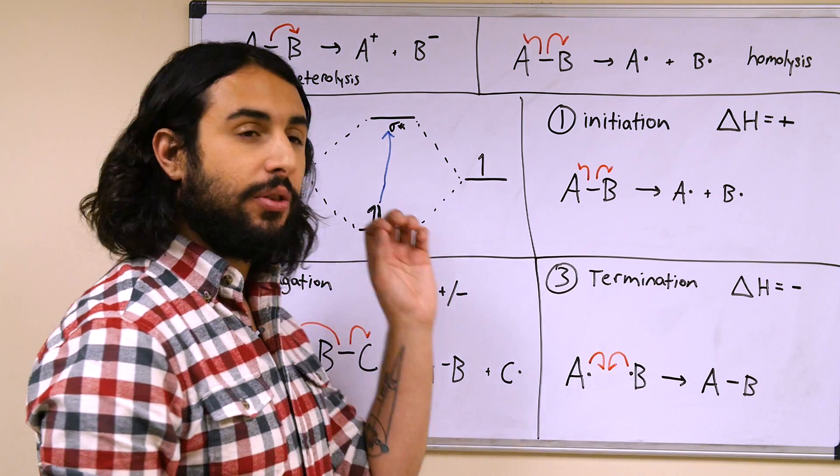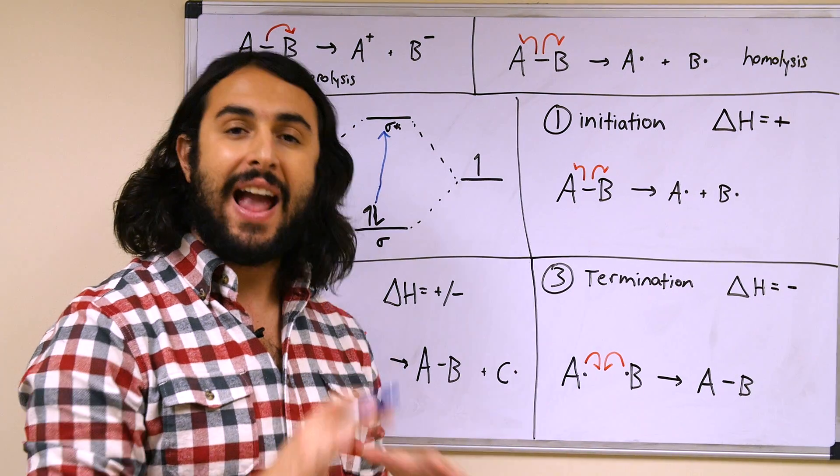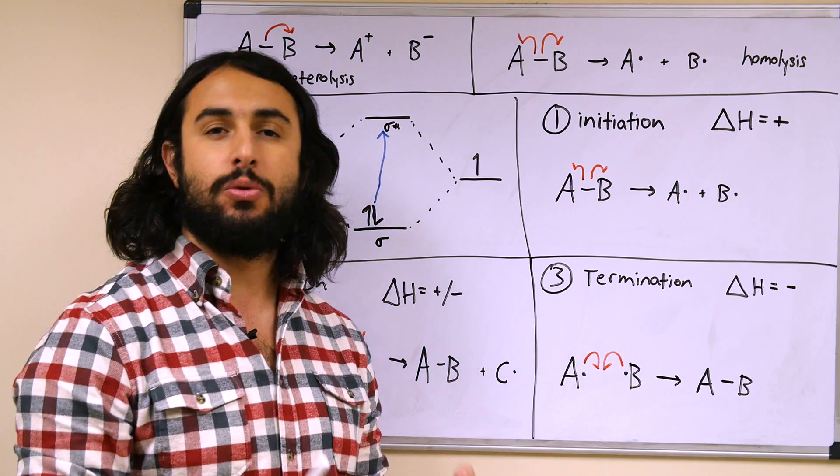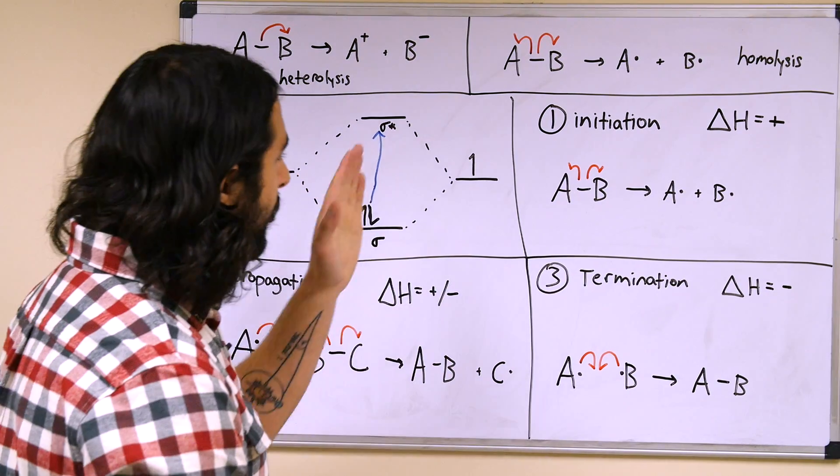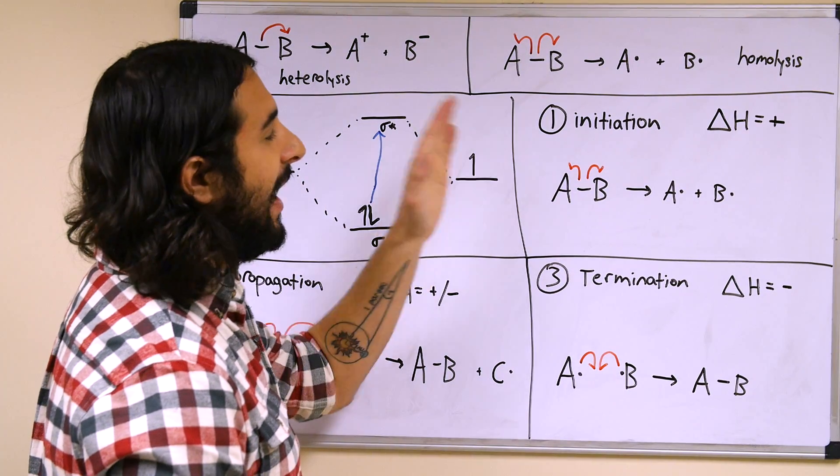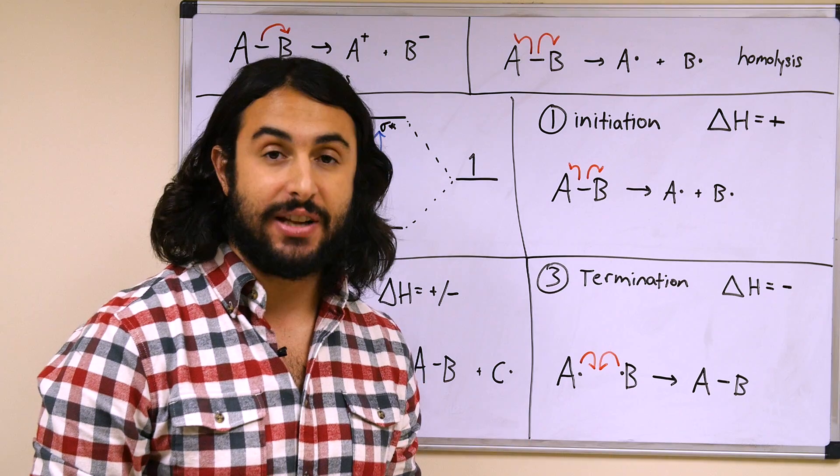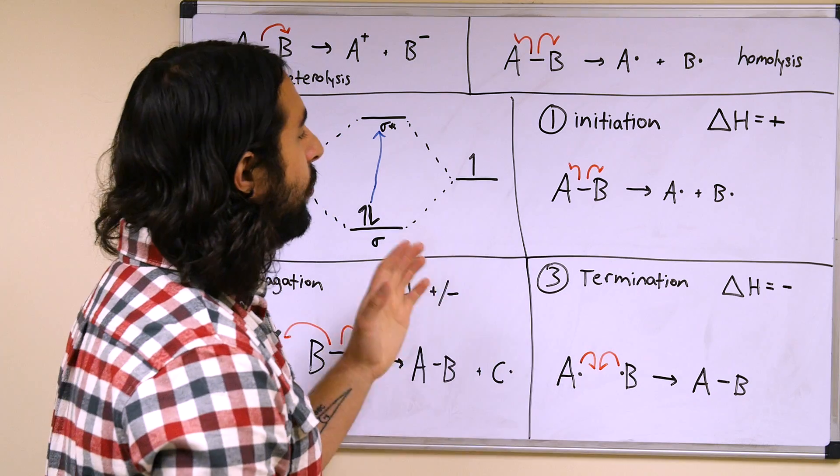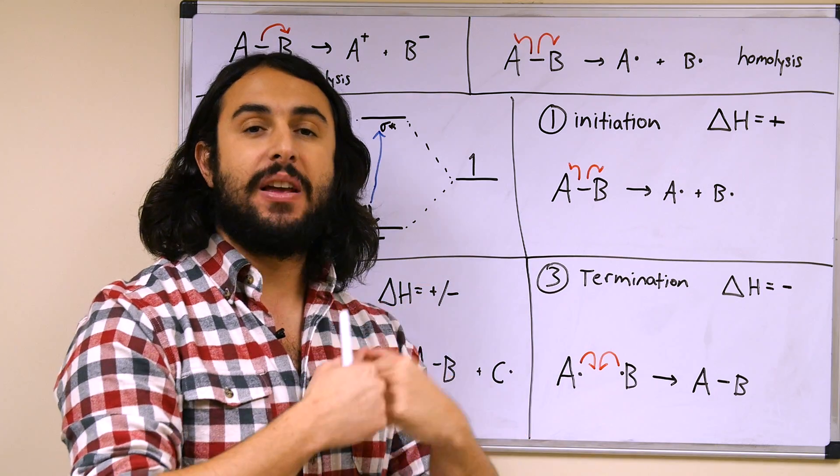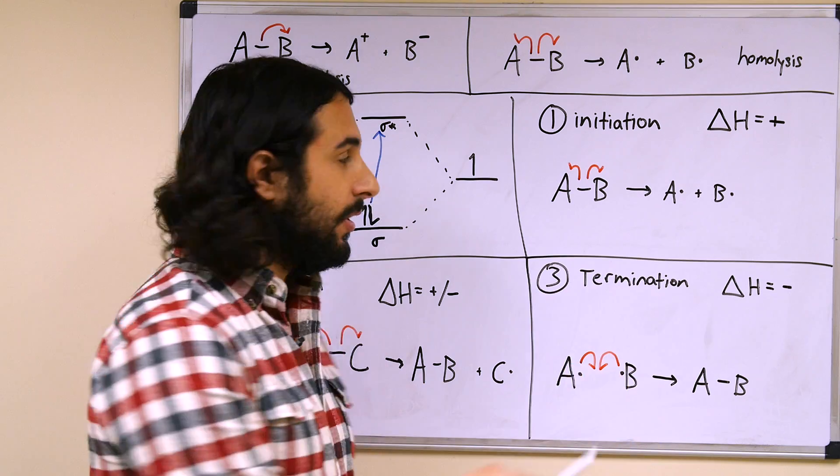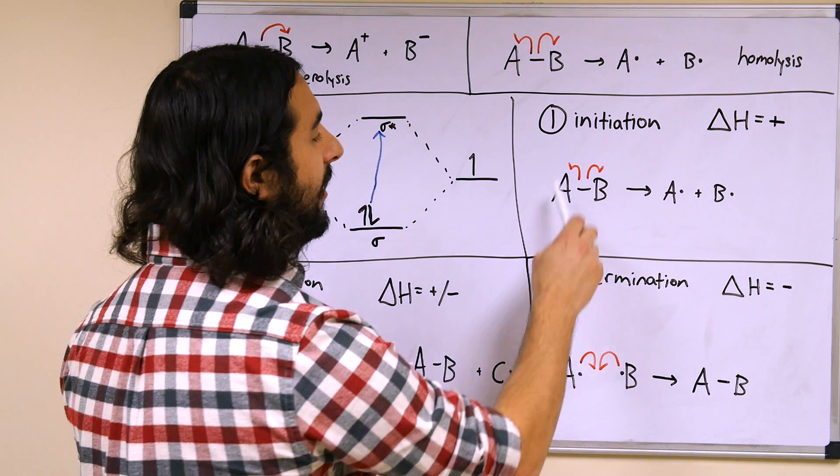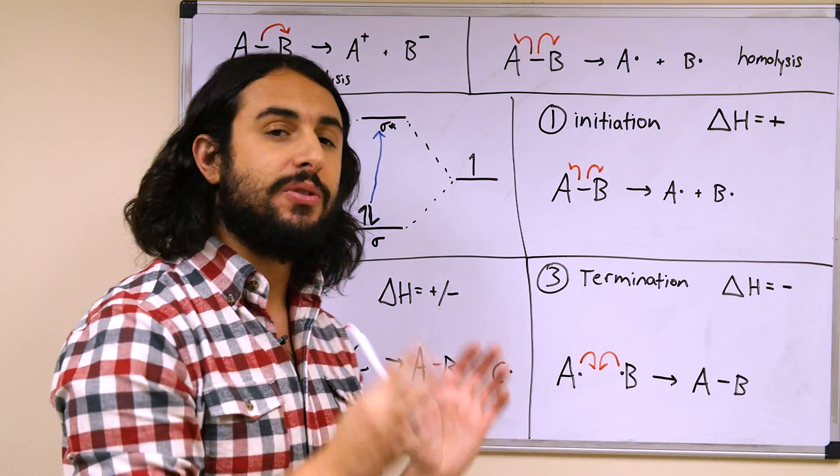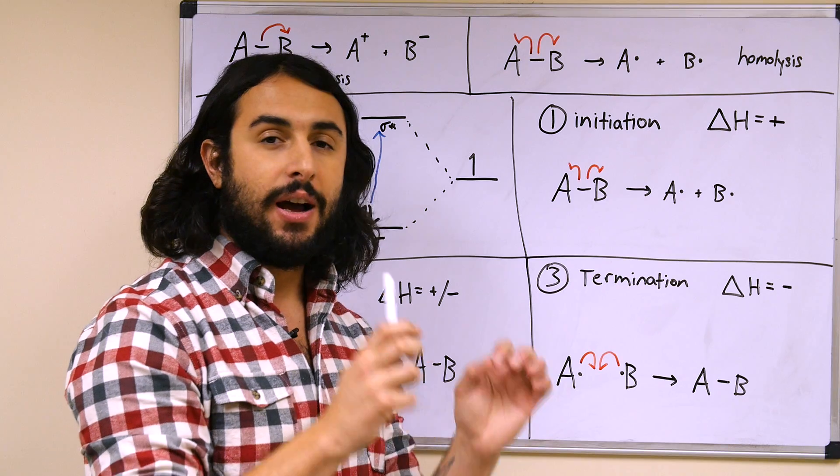Now that we understand that, we want to look at the three steps that are involved in any radical reaction. And so they have names and there are characteristics about them that will be true no matter which radical reaction we are looking at. So every radical reaction has an initiation step. An initiation step is the homolysis step—this is where a covalent compound becomes two radicals. So we have one covalent compound and then this will become two radicals.